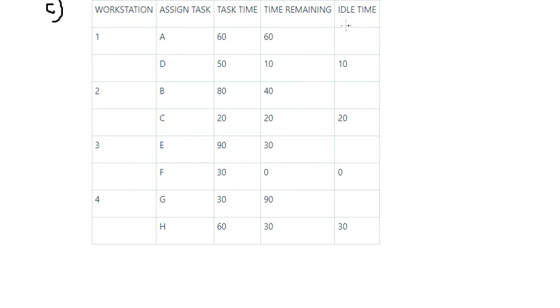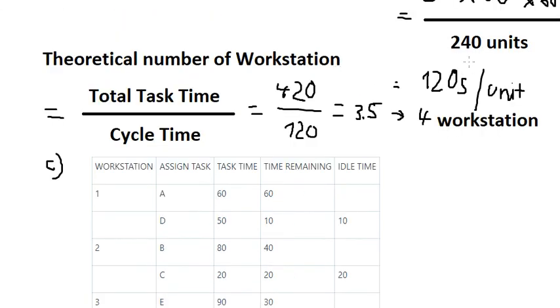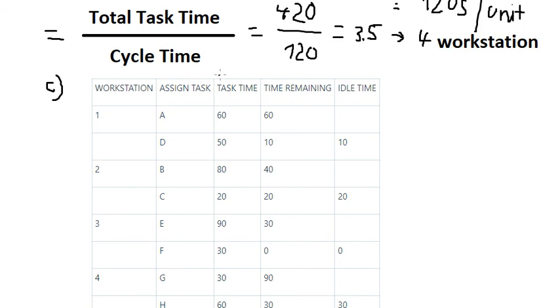And now we calculate about idle time to calculate the time remaining. We know that we have 120 seconds in here. So we have 120 minus 60, we have time remaining. Later that, we have 60 minus 50, we have 10. And this number in here is the idle time.